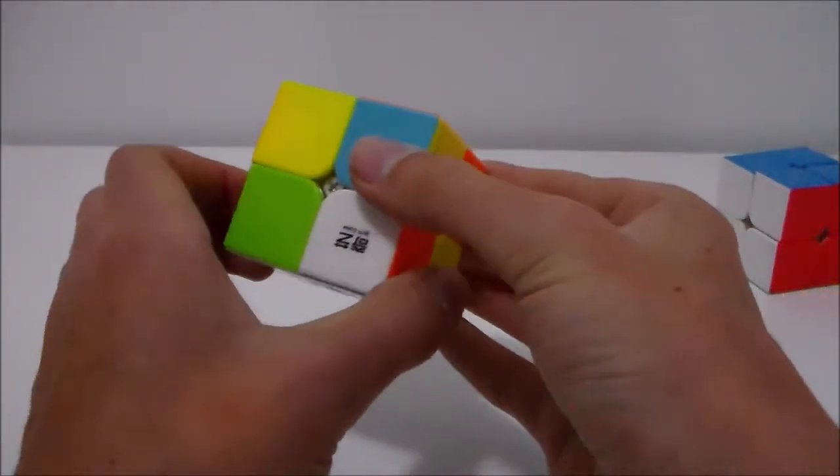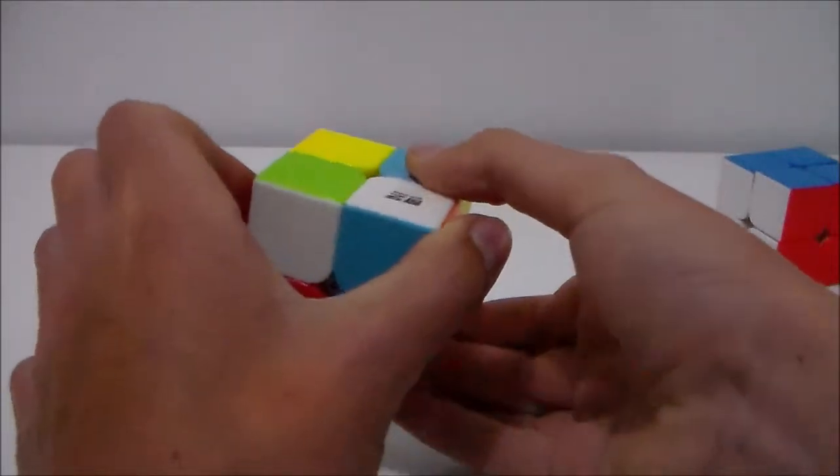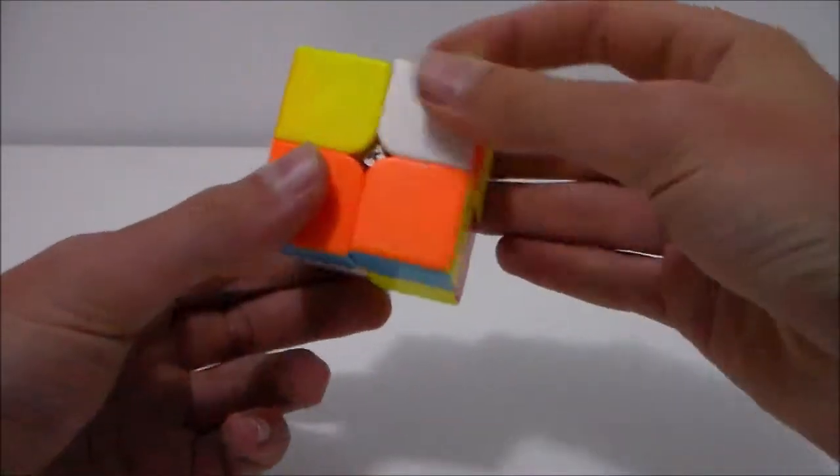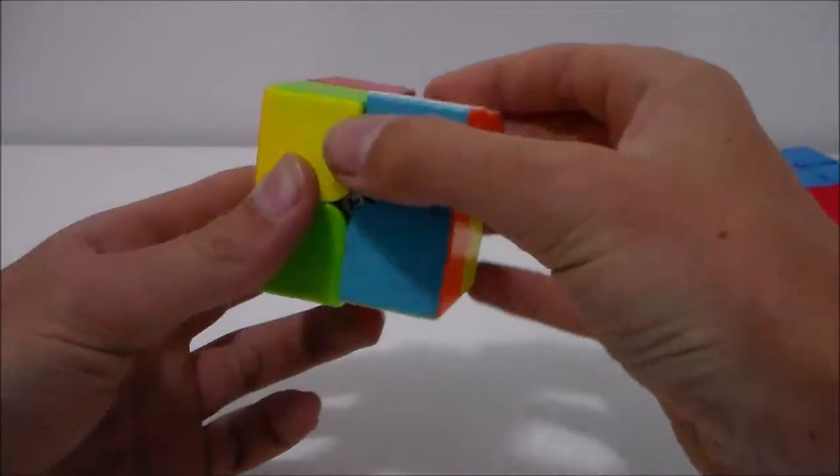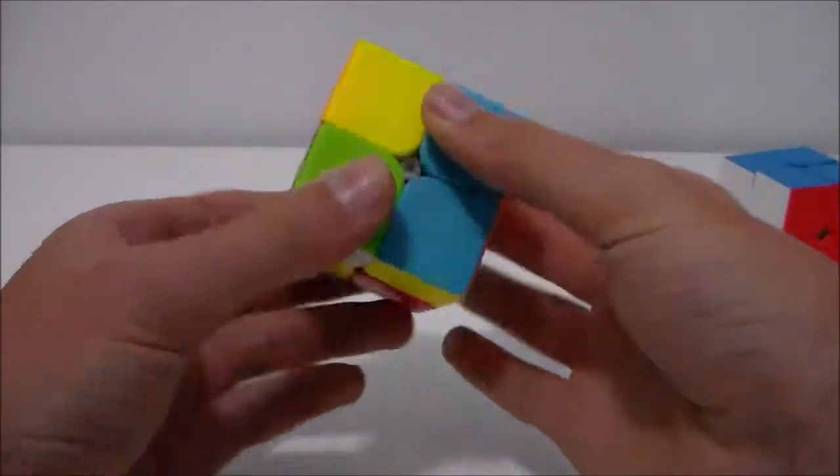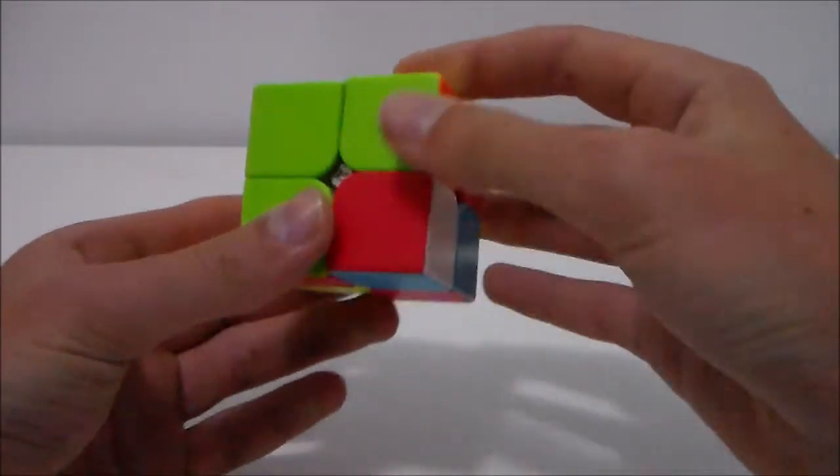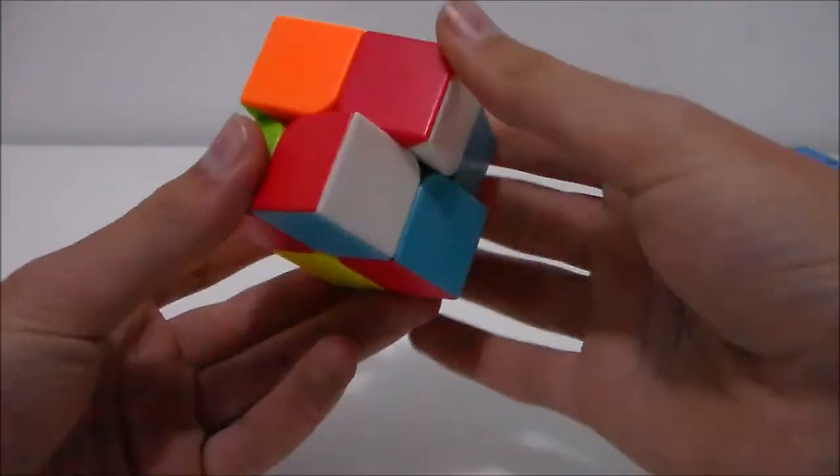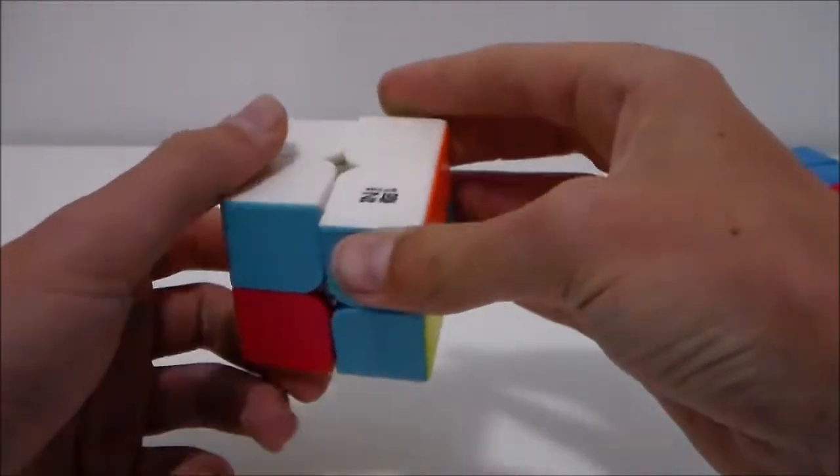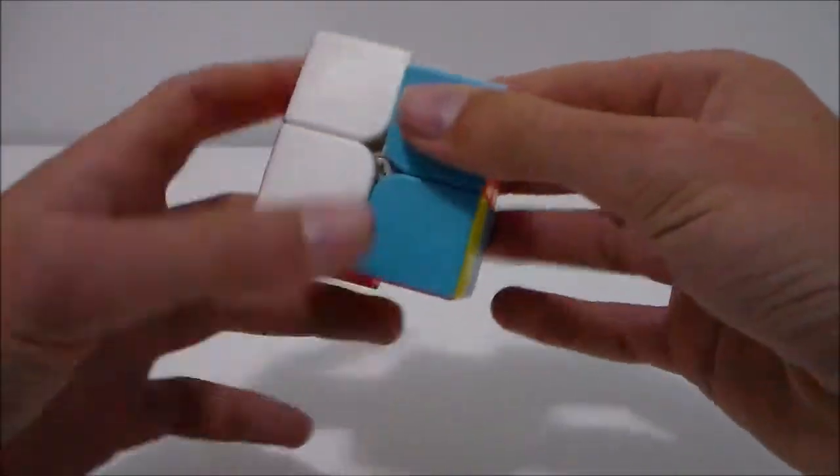So what I will want to do is perform D prime, R prime, D R. This will get the two into their correct place. I will want to do the same with another piece, so I'll just rotate this down and try to find where the next piece here will be. And I got lucky and then the first layer is solved.